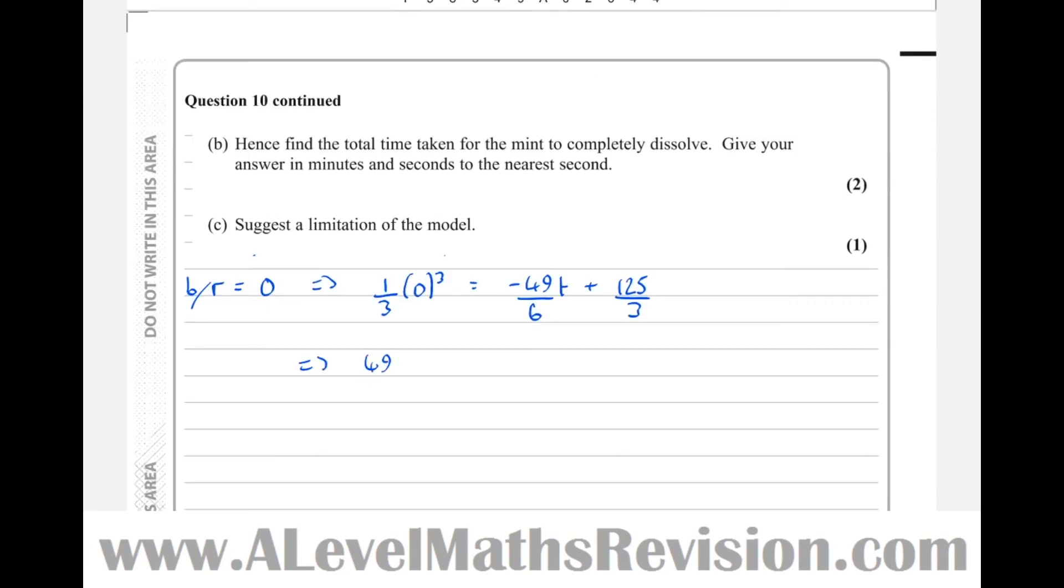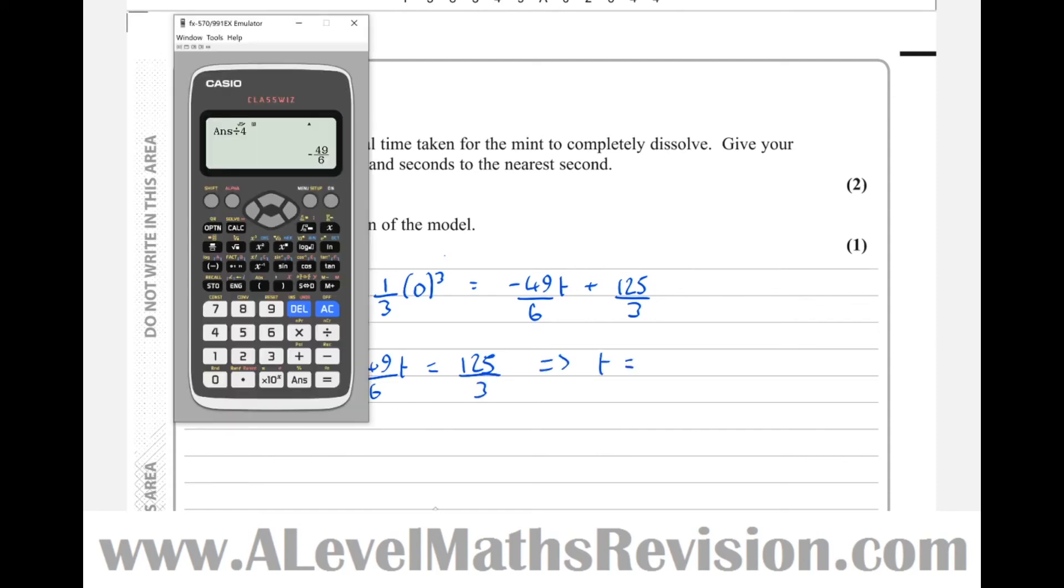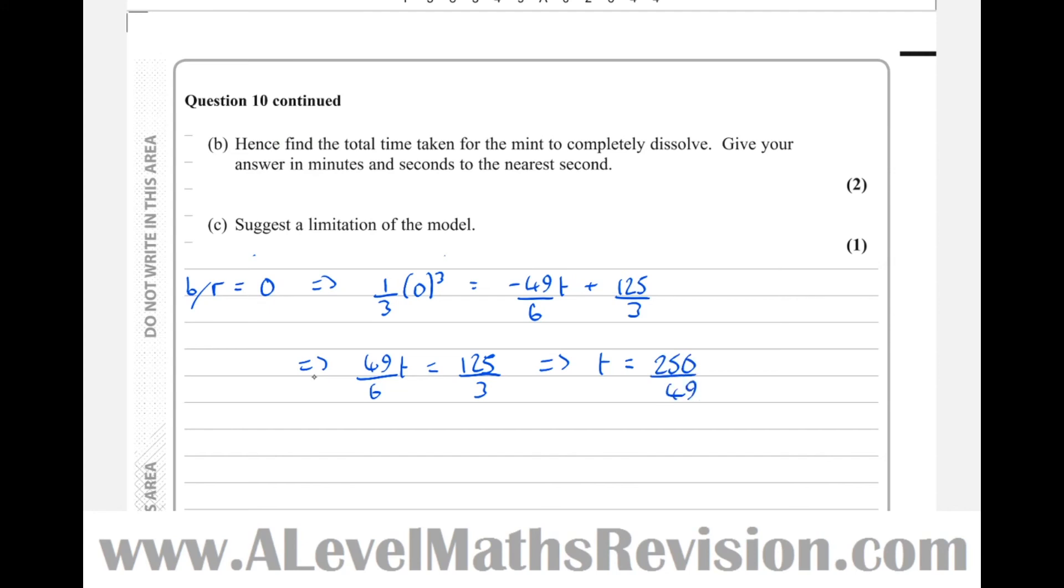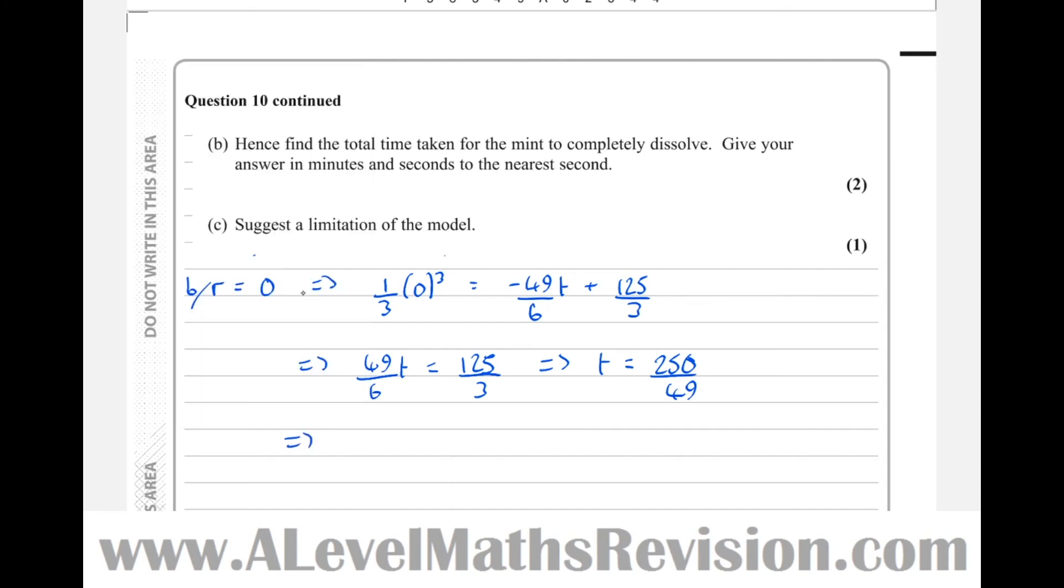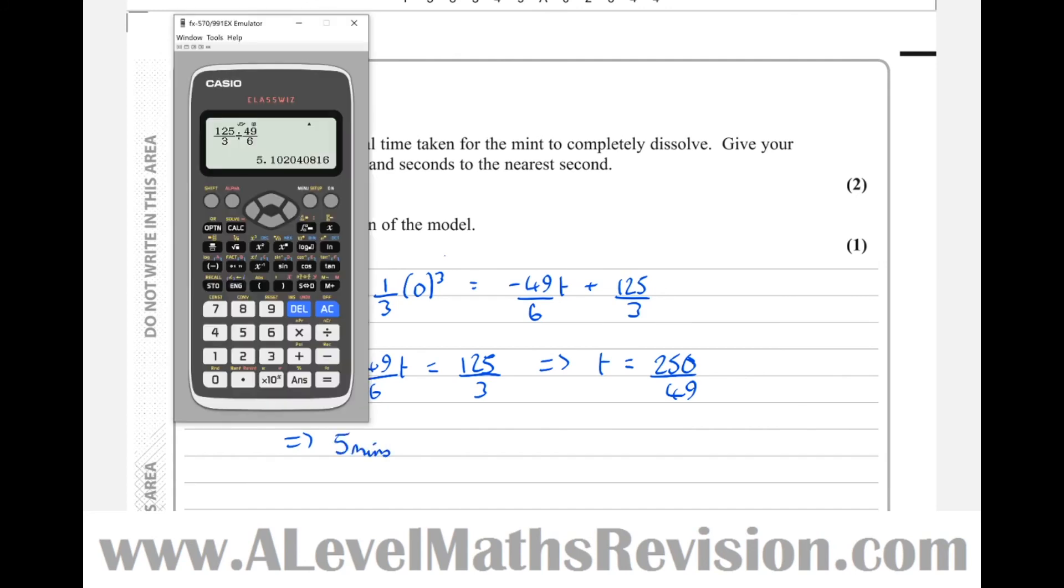So a third of 0 cubed equals minus 49 over 6t plus 125 over 3. That means that t equals, so we've got 125 over 3, and we're going to divide that by 49 over 6 to get 250 over 49. So that's for the time in minutes and seconds to the nearest second. So I can see that it's 5.10204, so 5 minutes, then take away the integer part to leave just the part minutes. We'll times that by 60 seconds to get it in seconds. So 5 minutes and 6 seconds.